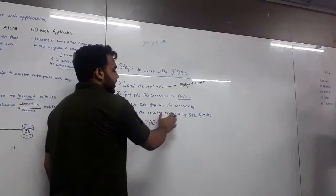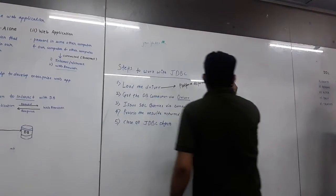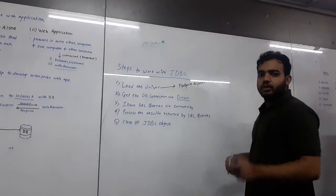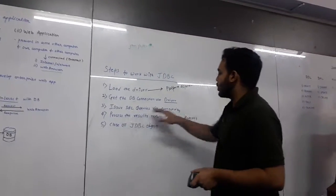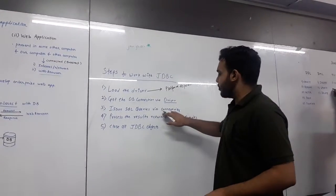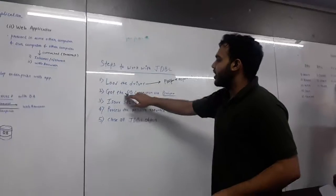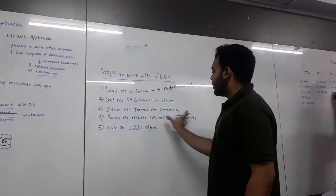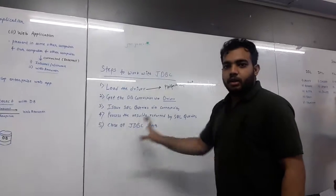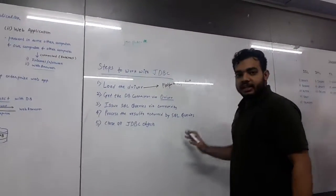Now process the results returned by the SQL queries. We have issued the SQL queries to get the results we want through our Java program. So it will issue the queries through this connectivity. Because we have got the DB connection, it will return some result. The SQL queries will be processed and the result will be given.